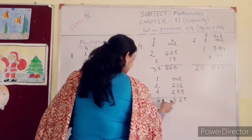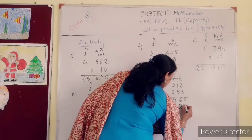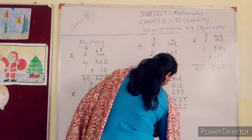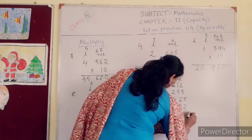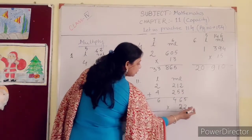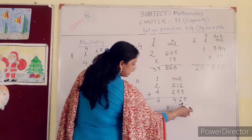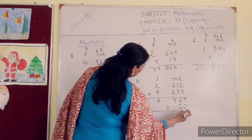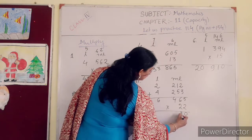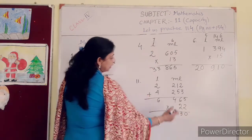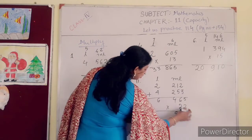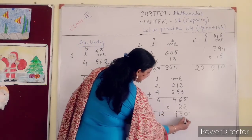Now multiply this number by 22. 2 into 5 is 10. 1 is in your hand. 2 into 6 is 12 plus 1 is 13. 1 is in your hand. 2 into 4 is 8 plus 1 is 9. 2 into 6 is 12.